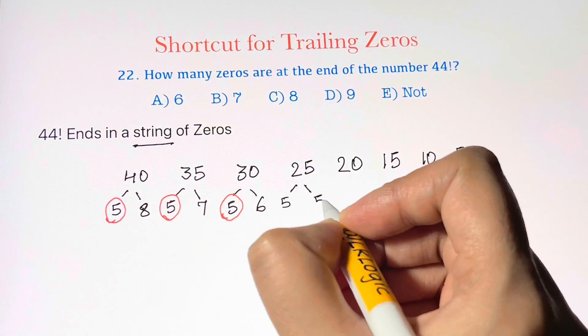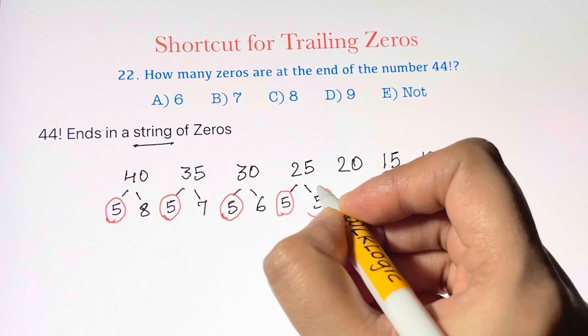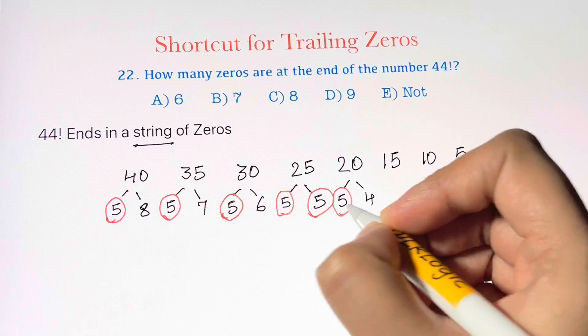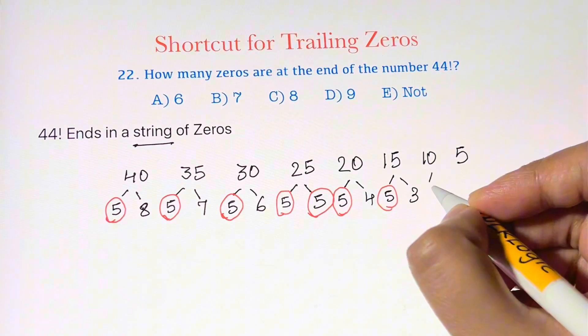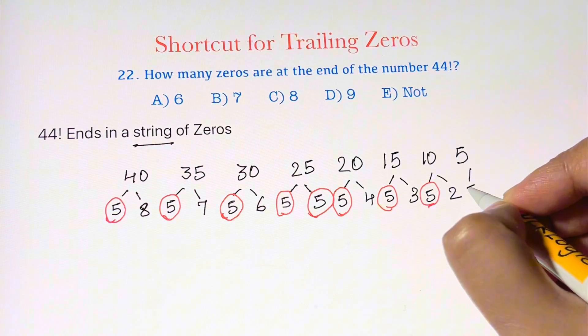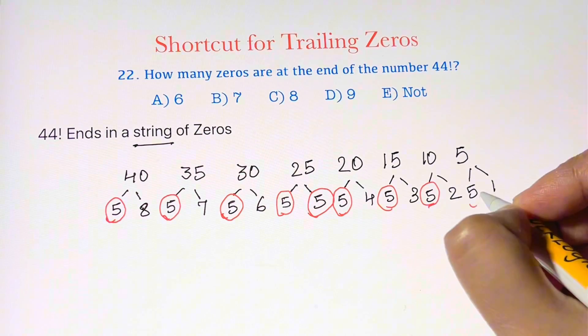20 we have 5 and 4, one factor of 5 here. 15, 5 and 3, so we have one factor of 5 here. For 10, 5 and 2, we have one factor of 5 here. And for 5, it's 5 and 1, so we have one factor of 5 here.